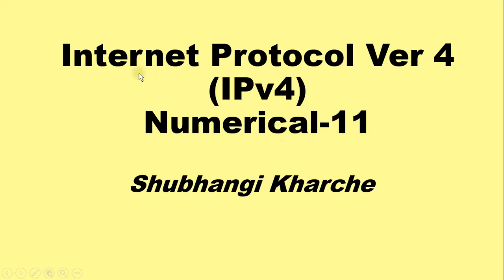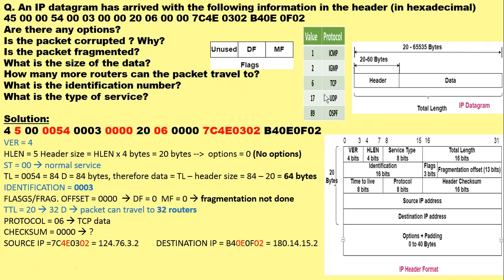Hello everyone. In this video I am going to explain a numerical on Internet Protocol version 4 which will illustrate the use of every field in the IPv4 header. The example is: an IP datagram has arrived with the following information in the header in hexadecimal format.